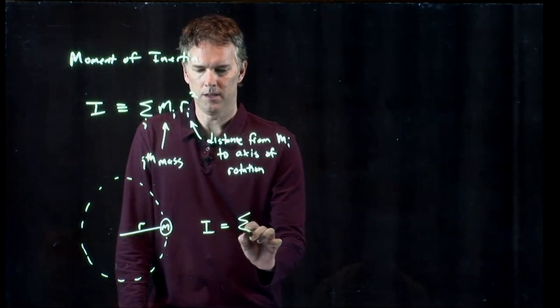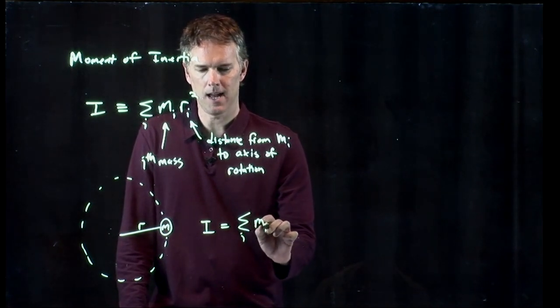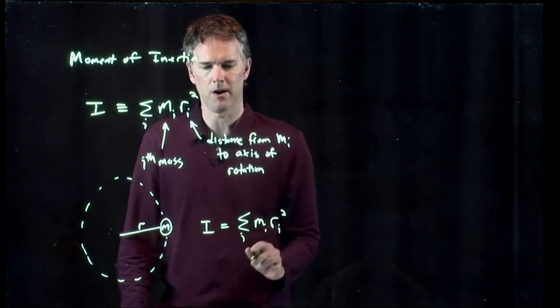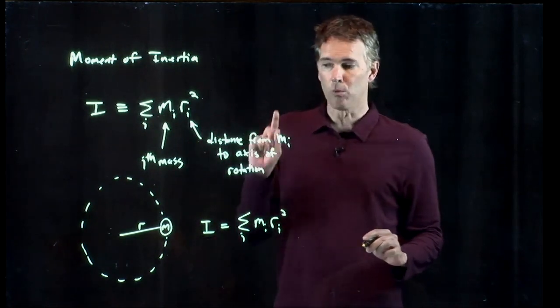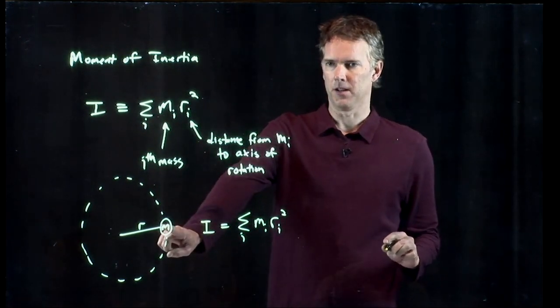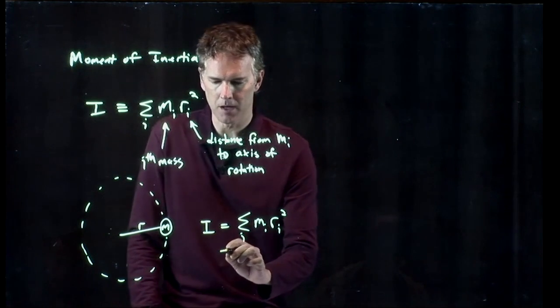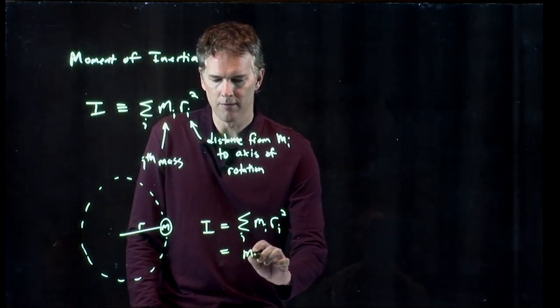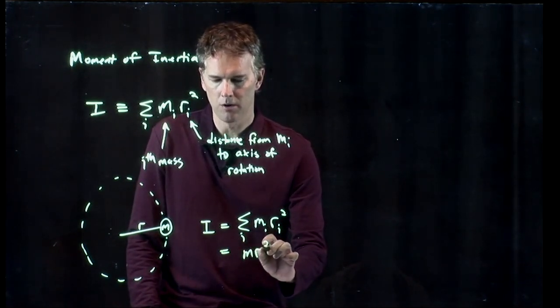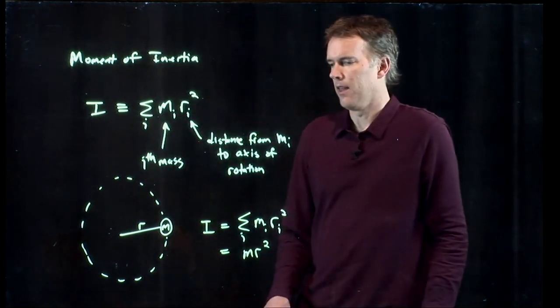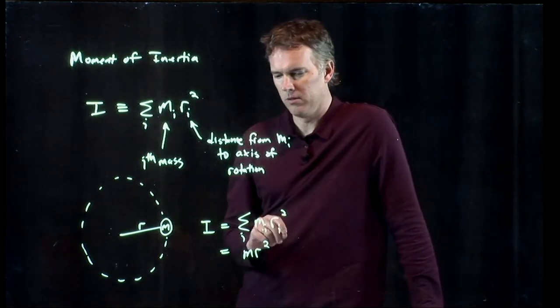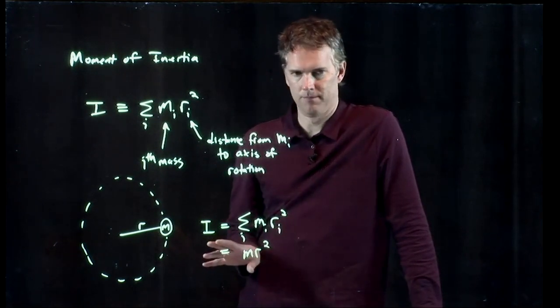Well, it's sum over i m sub i r sub i squared. We only have one particle in this example and so this just becomes m r squared and those are the variables that we used. We only have one term. That's it.